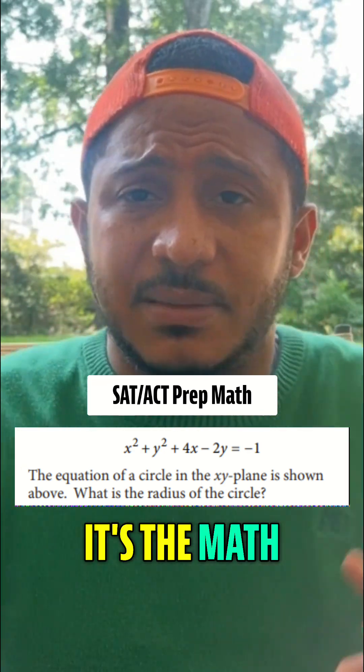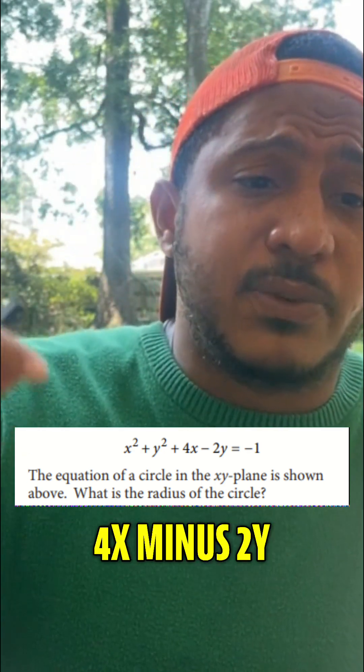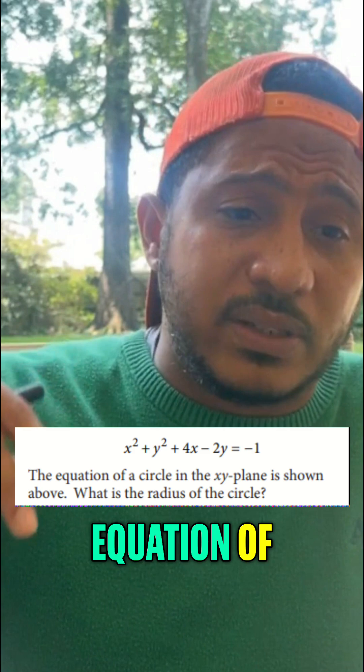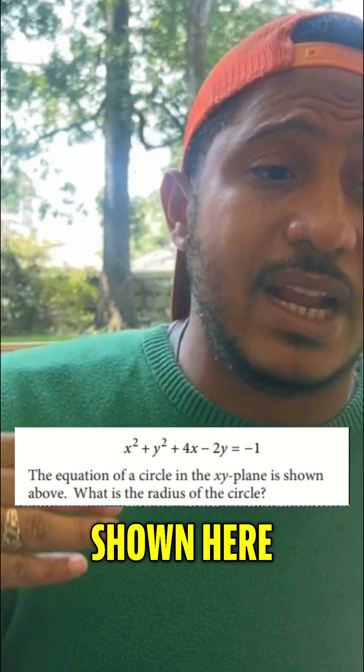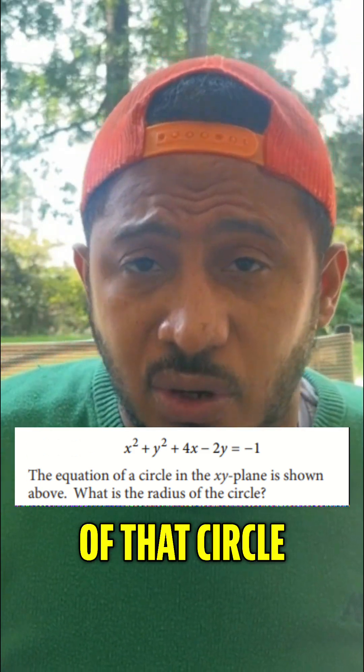SAT prep. Here we go. Mr. Math Guy, Steve. x squared plus y squared plus 4x minus 2y equals negative 1. So the equation of the circle in the xy plane is shown here. Then what's the radius of that circle?